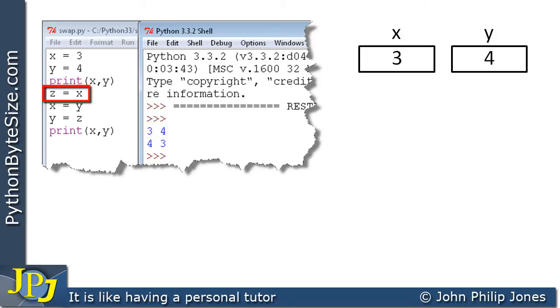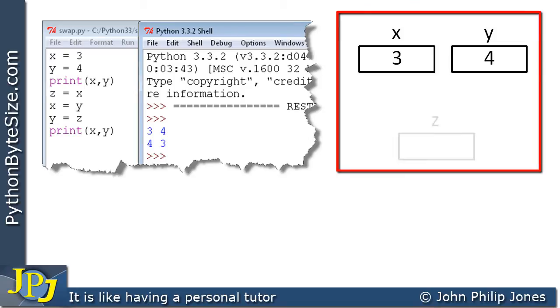Now let's consider this line here, z is assigned x. What will happen, a variable z is created, and a copy of the content of x is saved in z. So z now has the value of 3, and so does x. So we've saved the original value of x.